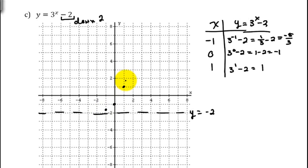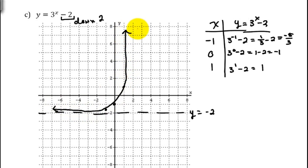The graph comes down and gets very close to the asymptote but never actually crosses it, then goes up very fast. Make sure to label the points you put on your graph.